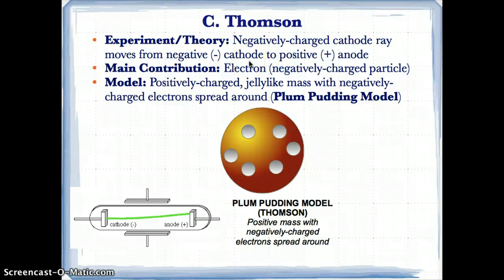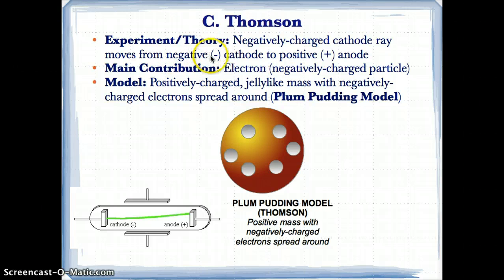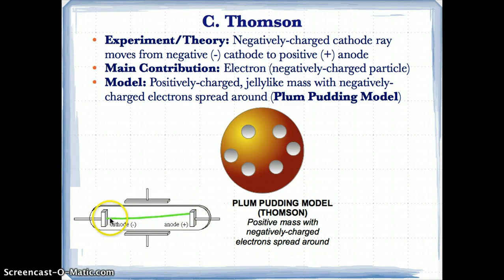Next we have Thomson. Thomson proved that the atom wasn't the smallest particle — there are actually smaller particles within it. His experiment involved shooting a negatively charged cathode ray, shown here by the green curved line, moving from a negatively charged plate called a cathode to a positively charged plate called an anode.